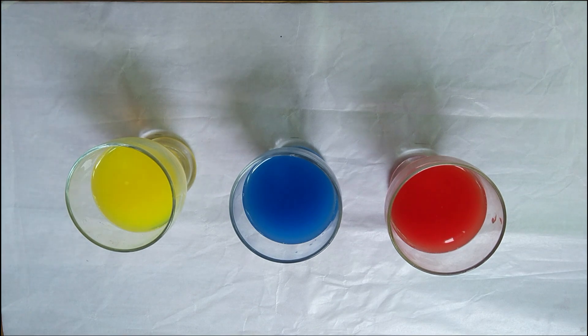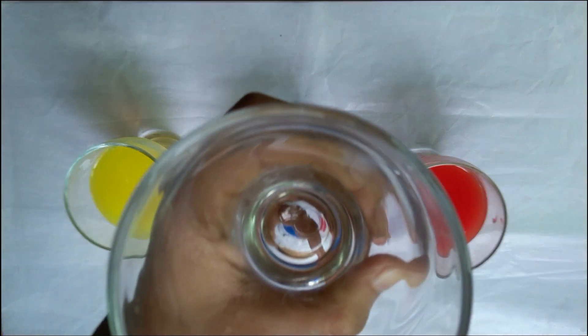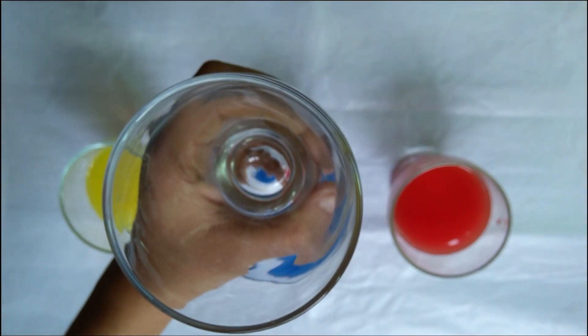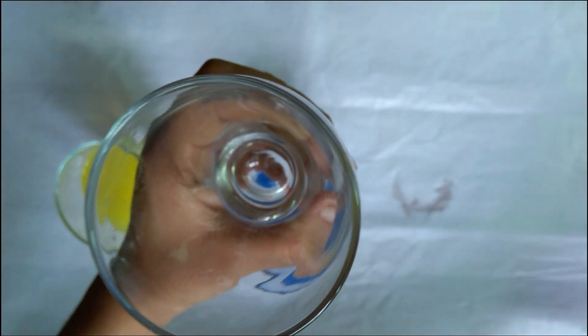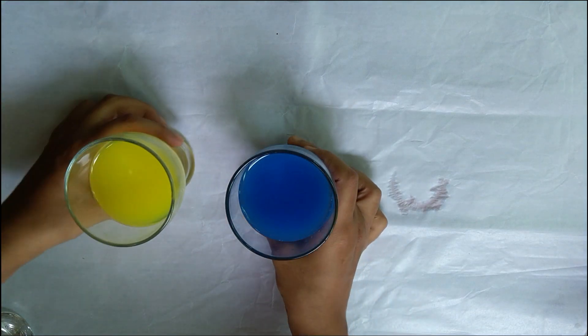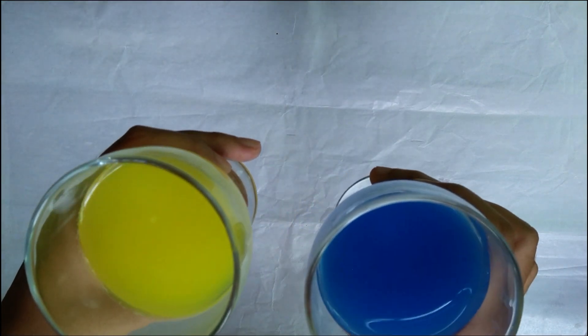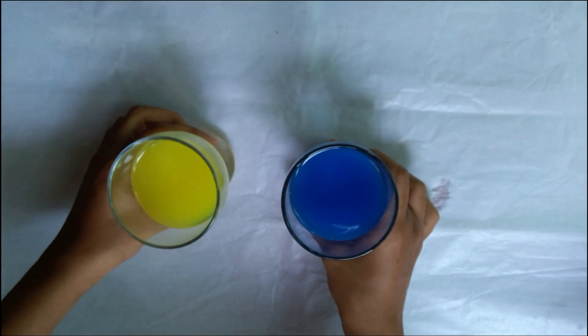Students, now we are going to see what happens when we mix two primary colors. I have taken an empty glass and slowly I am going to mix the primary colors step by step. First, I will mix yellow and blue color and see what happens.